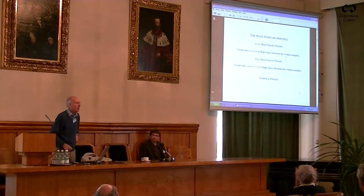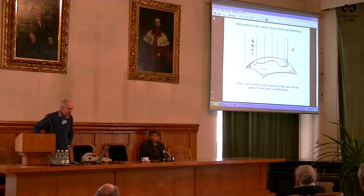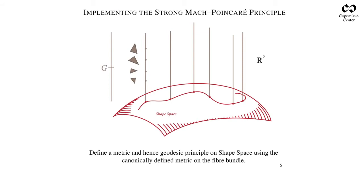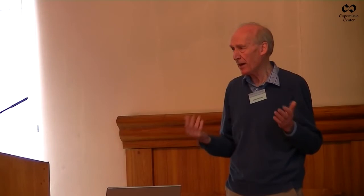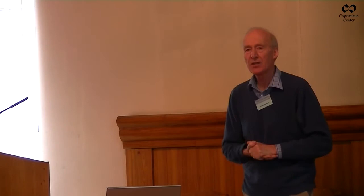So let me say how that's going to be implemented. I will be able to implement the strong Mach-Poincaré principle if I can define a metric on shape space. Let me just say that shape space is a completely general concept. All that is underlying this whole picture is a Lie group—either finite-dimensional or its generalization to the three-dimensional diffeomorphism group or the conformal group in three dimensions.